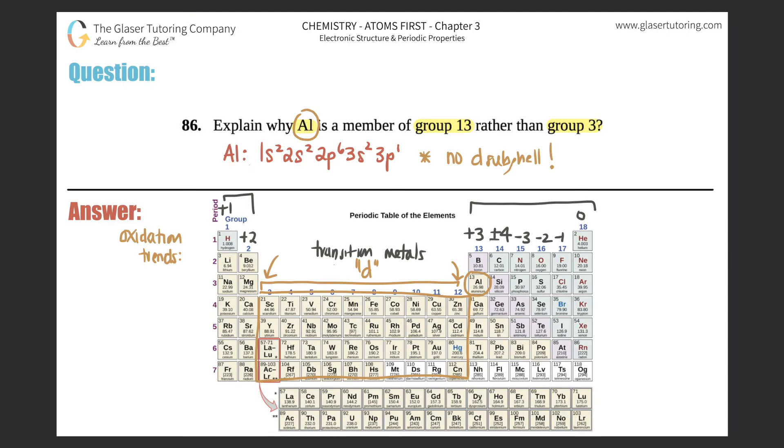That's why they can transition from one charge to another; they don't have a specific trend like the main group elements. That's the end: no d subshell, no electrons in the d subshell. Simple as that.